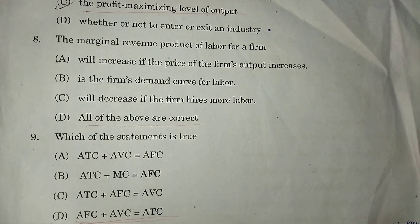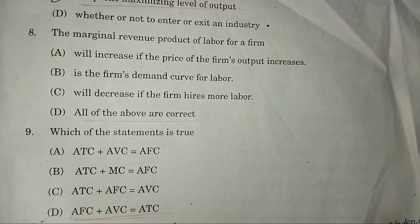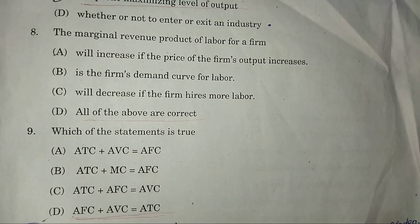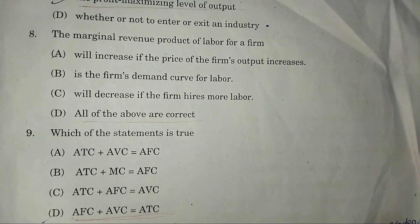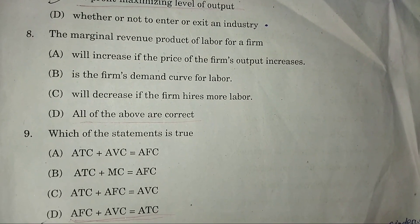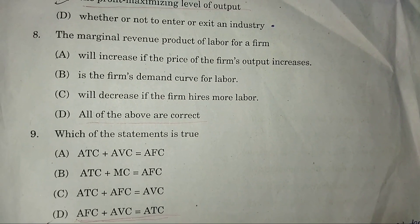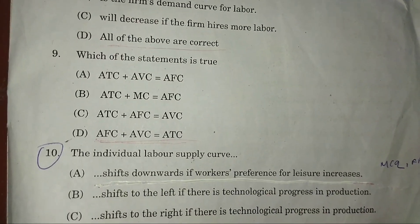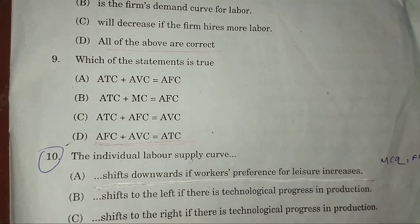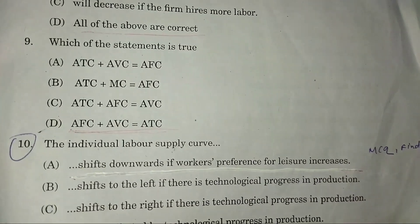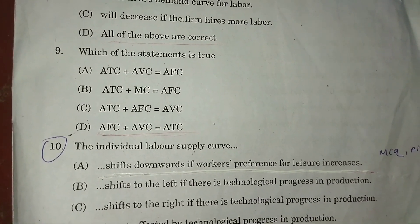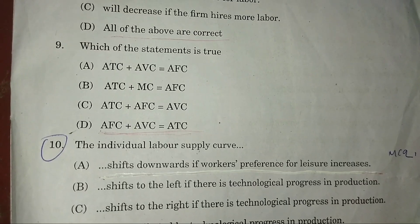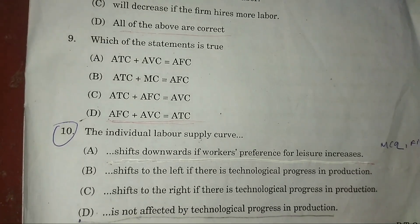Question 8: Marginal revenue product of labor per firm — answer: D — all of the above. Question 9: Which of the following statement is true? Answer: D — AFC plus AVC equals average total cost.